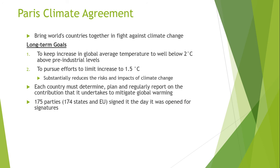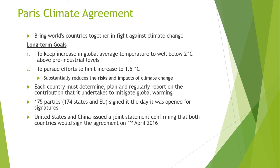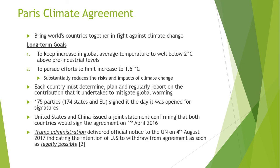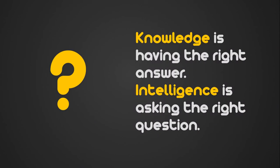In this agreement, each country must determine, plan, and regularly report on the contribution it is undertaking to mitigate the effects of global warming. In this agreement, 174 states and the European Union signed it the day it was opened for signatures. The United States and China issued a joint statement confirming that both countries would sign the agreement on 1 April 2016. However, the Trump administration delivered official notice to the United Nations on 4th August 2017 indicating the intention of the United States to withdraw from the agreement as soon as legally possible.